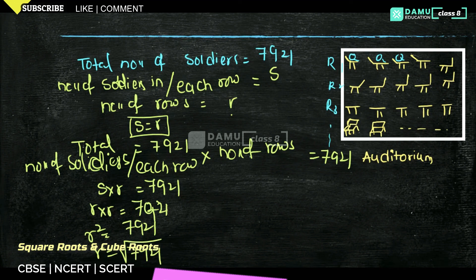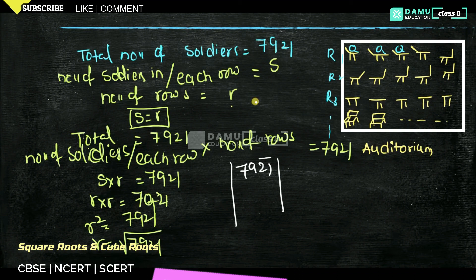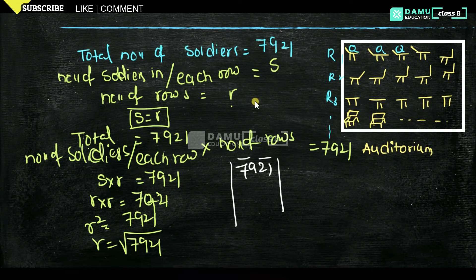So let's find out. 7921 — that one is not possible with the prime factorization method, so we will go with the division method. First, you take two groups: 79 and 21. Below 79, is there any perfect square? Yes — 64. So 8 eights are 64.